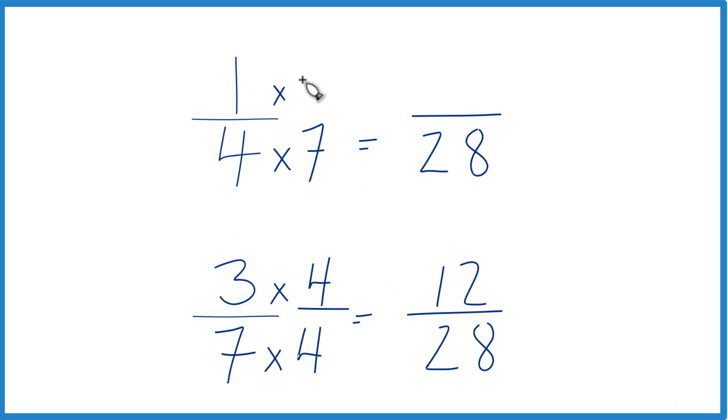Up here, one times seven, that is seven. And so now we have 28 for both of these fractions as our denominator.